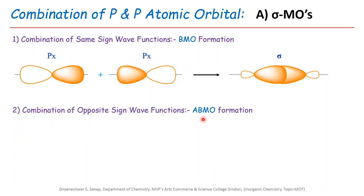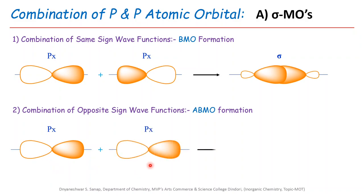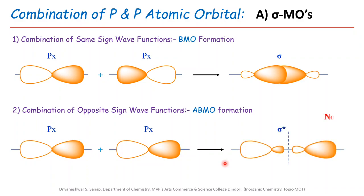The second case for sigma: combination of opposite-sign wave functions produces the antibonding molecular orbital. When the px orbital of the first atom combines with the px orbital of the other atom but the signs of the wave functions are different — the dark color indicating one sign and the hollow orbital shape indicating the other sign — when the plus-sign wave function is attracted toward the minus-sign wave function, it results in formation of the antibonding molecular orbital.